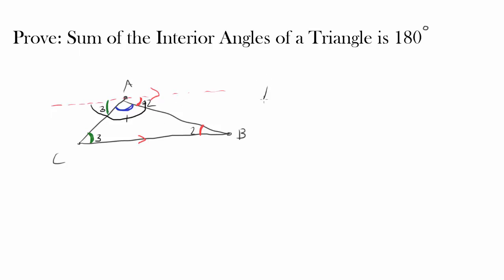So we have angle 1 plus angle 2 plus angle 3 being equal to the angle of a straight line, or 180 degrees. And angle 1, angle 2, and angle 3 are the interior angles of the triangle. So we have just proven the sum of the interior angles of a triangle is 180 degrees, and we are done.